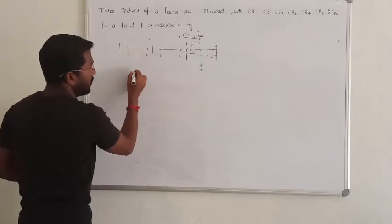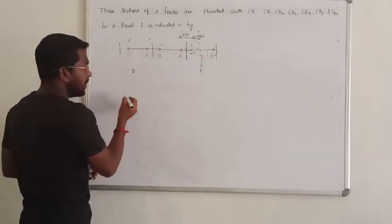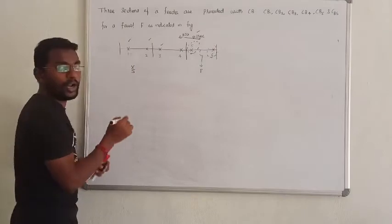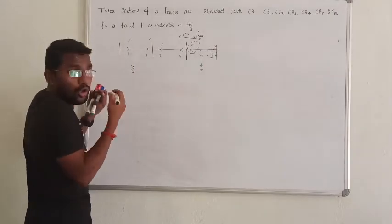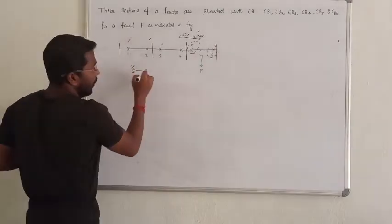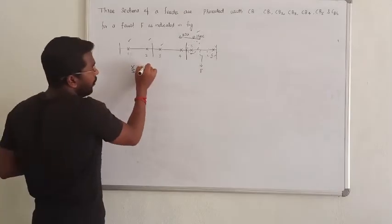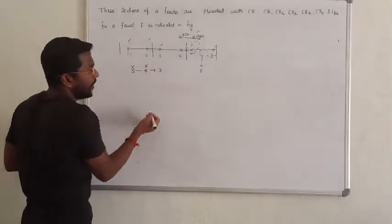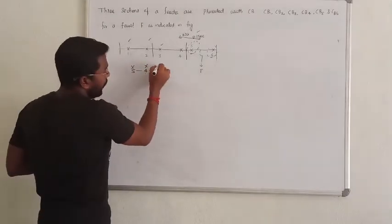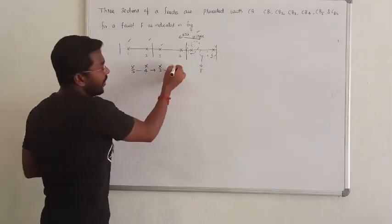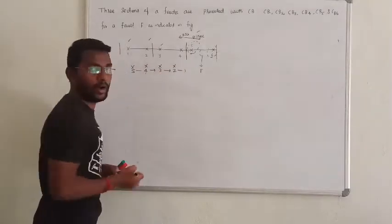Now, what is the sequence? Circuit breaker 5 will operate first. If 5 fails to operate, then relay 4 will operate. If relay 4 fails, then relay 3 will operate. If relay 3 fails, then relay 2, and if relay 2 also fails, then relay 1 will operate.